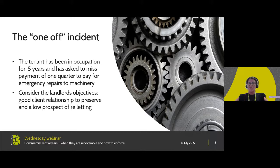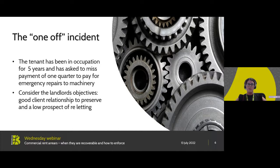Scenario A is what I like to think of as the one-off incident. We have a tenant who's been in occupation for five years with a good relationship with the landlord, and the lease is due to run for 15 more years. The tenant has approached the landlord and said they have a key piece of machinery that needs to be repaired — they weren't expecting this, don't have the cash flow — and asked for a month off so they can stop the halt of production and commence trading again, getting funds in place for the next quarter.